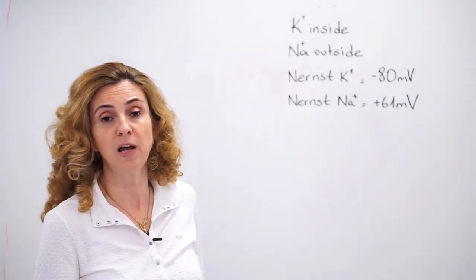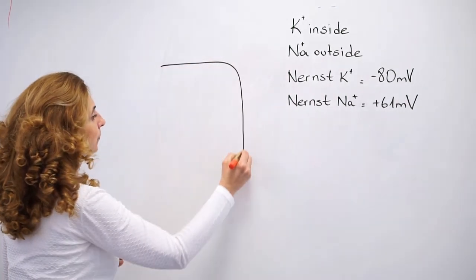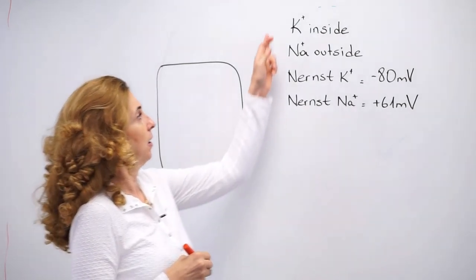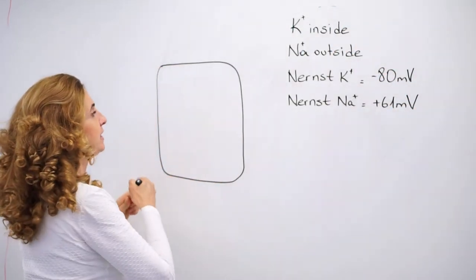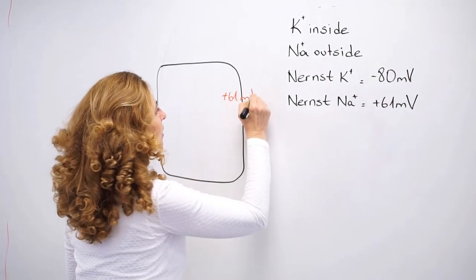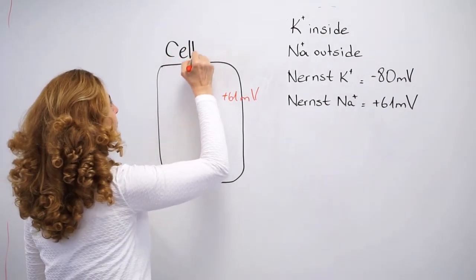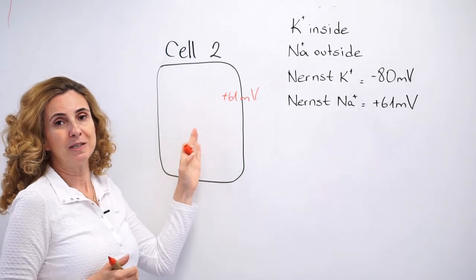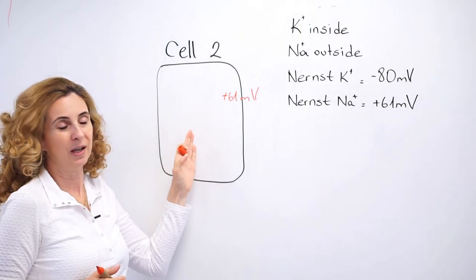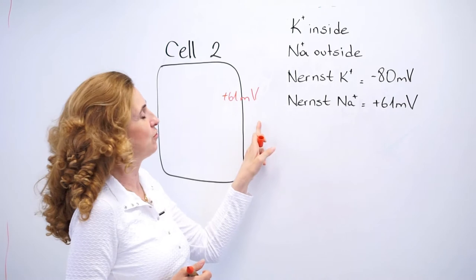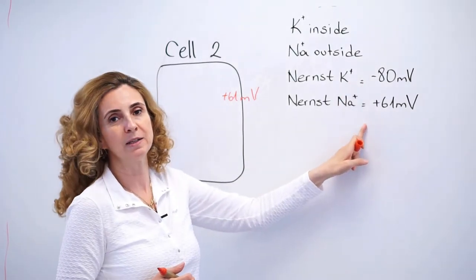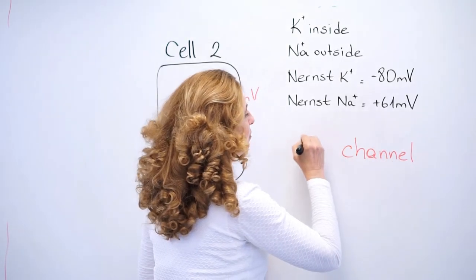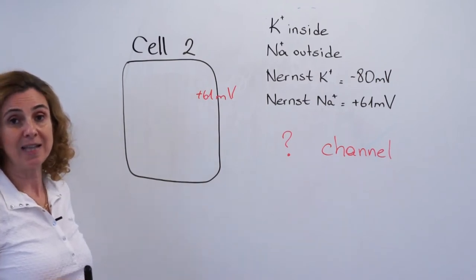Let's talk about a different cell — cell number two. What are we supposed to think when we are given these conditions and a resting membrane potential of plus 61 millivolts in cell number two? By now it must be a bit easier for us to answer this question. We are going to compare the resting membrane potential with the Nernst potentials of the two main ions and try to understand what type of channel is present on the membrane of this cell when the cell is at rest.